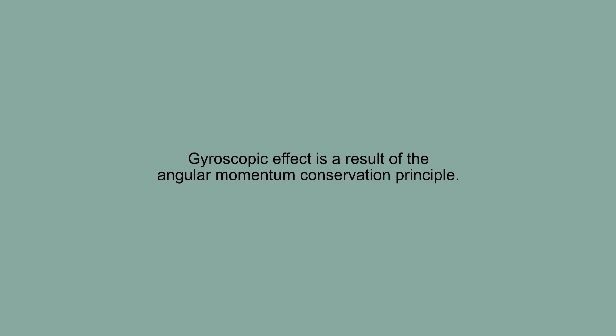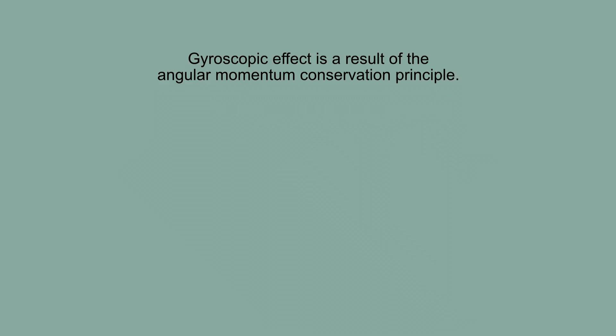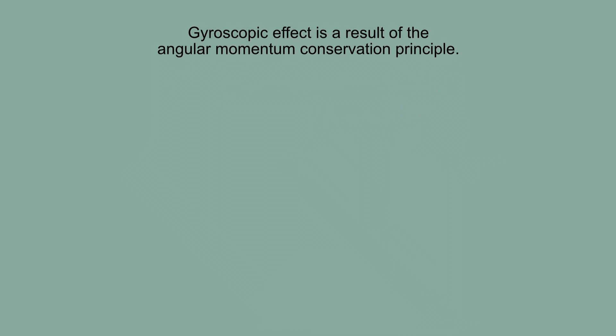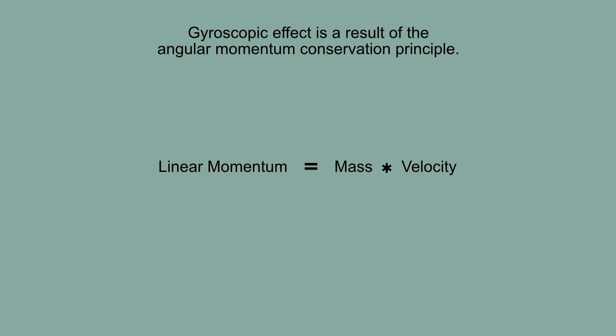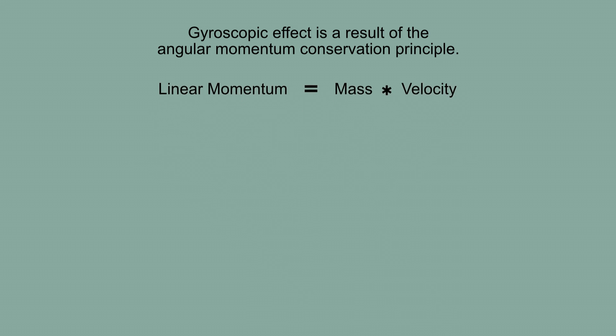The gyroscopic effect is nothing but a result of the angular momentum conservation principle. Before going into what angular momentum is, let's first explore linear momentum. Linear momentum is the product of an object's mass and its velocity. For example, a truck moving with very low velocity and a bullet fired from a gun might have the same linear momentum because the truck is heavy and the bullet is fast.